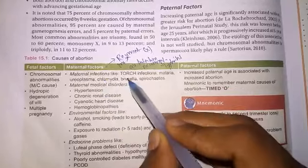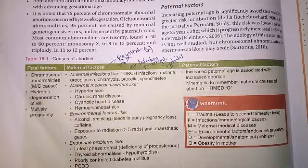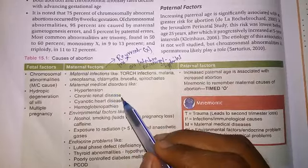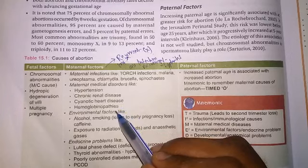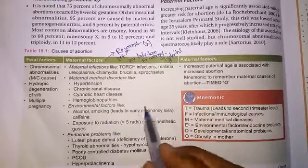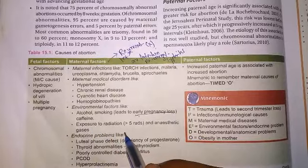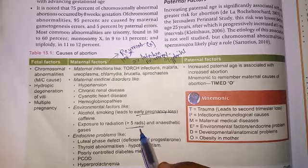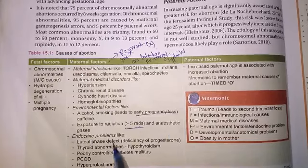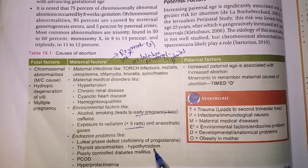Other maternal infections include TORCH, malaria, Ureaplasma, Chlamydia, Brucella, and spirochetes. Maternal medical conditions include hypertension, chronic renal diseases, cyanotic heart diseases, hemoglobinopathies. Environmental factors include alcohol, smoking — which causes early pregnancy loss — caffeine, exposure to radiation greater than 5 rads, and anesthetic gases.